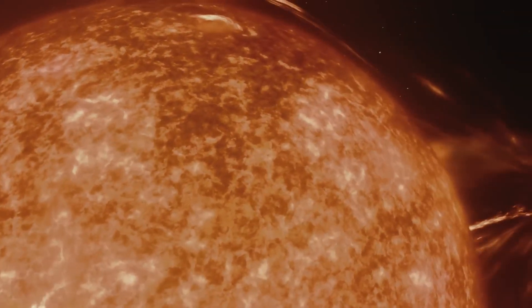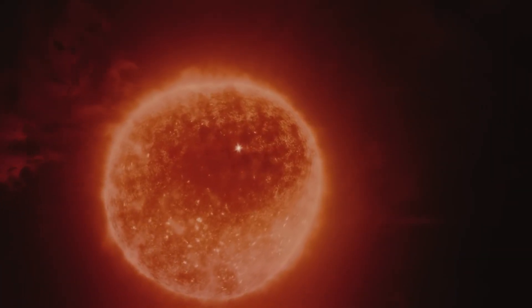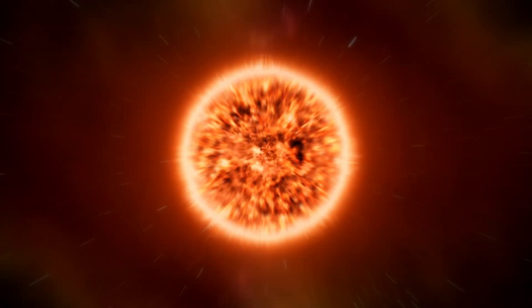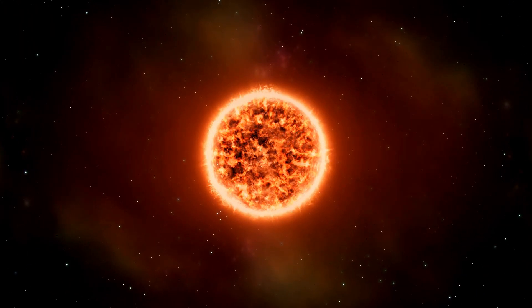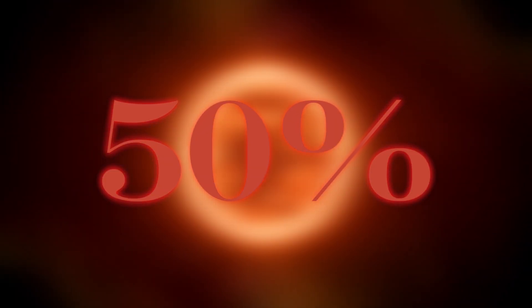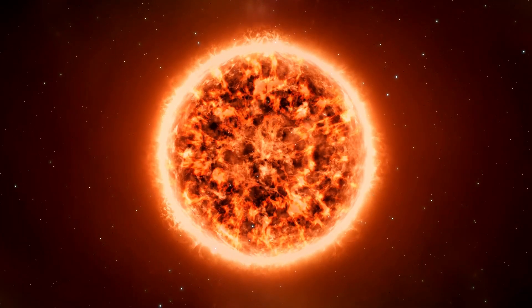Some scientists speculate that a sizable object, such as a planet, may have disturbed the star's surface or even been absorbed by it. In recent months, Betelgeuse has shown an increase in brightness close to 50% of its average brightness, which is unexpected, as normally stars tend to become dimmer as they age.